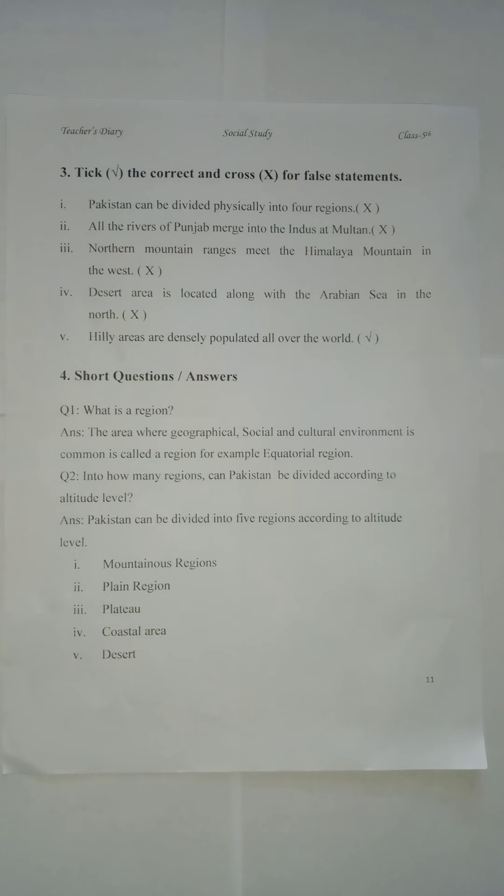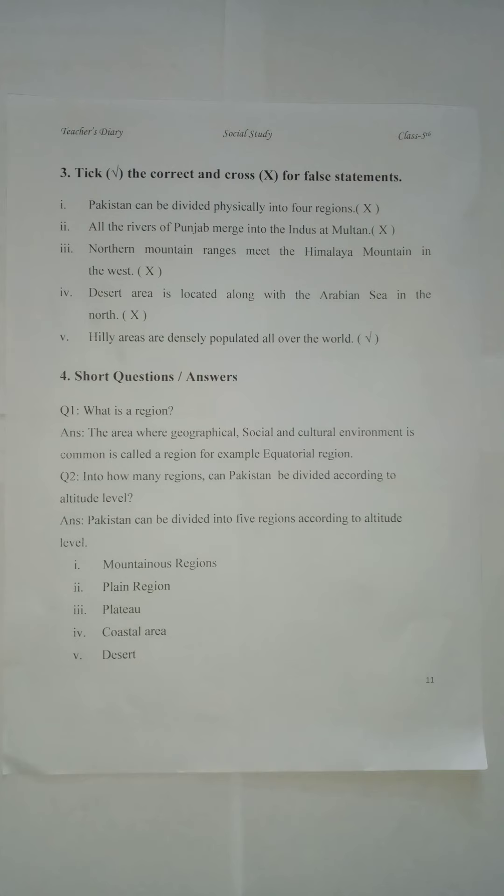Now students, on the next page write: tick for correct and cross for false statements. Number 1: Pakistan can be divided physically into four regions — False. Number 2: All the rivers of Punjab merge into the Indus at Multan — Cross. Number 3: Northern mountain ranges meet the Himalaya mountain in the west — False. Number 4: Desert area is located along with Arabian Sea in the north — False. Number 5: Hilly areas are densely populated all over the world — True. Draw a finishing line.